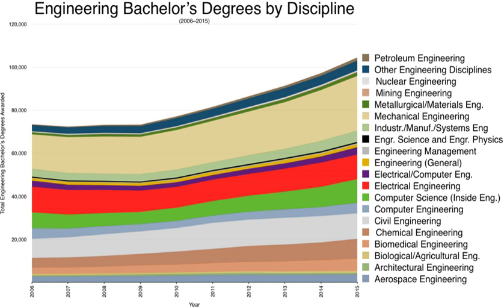After choosing a specialization, an engineering student begins to take classes that build on their education and focus toward the specialization. Towards the end of their undergraduate education, engineering students often undertake a design or special project specific to their field. It is common for university engineering students to partake in different forms of career development during their undergraduate studies, often taking the form of internships, cooperative education programs (co-ops), research experiences, or service learning, facilitated by universities or sought out independently.